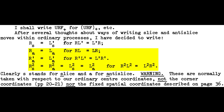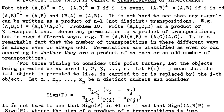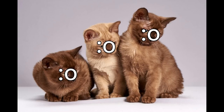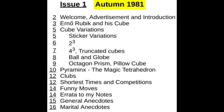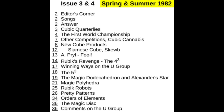He also came up with an anti-slice move notation, but who even cares about anti-slice, right? A lot of the rest of this book is filled with group theory, so we won't go over this too much. The more interesting content was actually repeated in Singmaster's Cubic Circular magazine, of which there were five issues between 1981 and 1985 — possibly the only thing in cubing to be released more inconsistently than these videos.